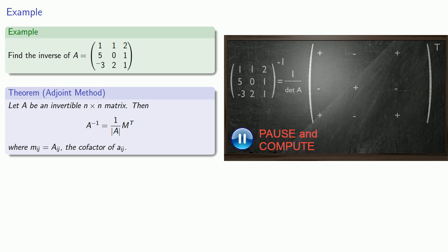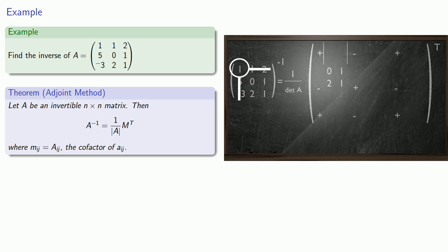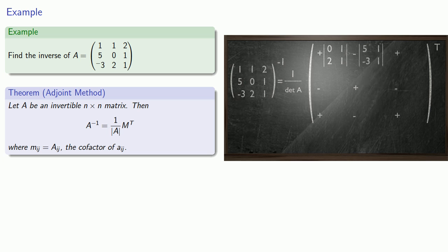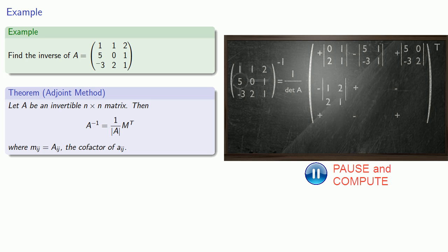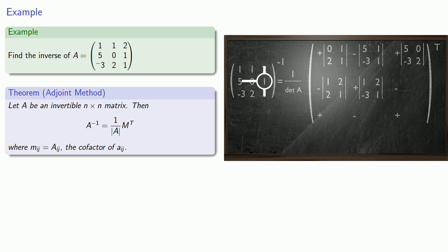For the first row, first column, we'll cross out that row and column, and the minor will be the determinant of what's left over. For the first row, second column, we'll cross out the first row and second column to get the minor. For the first row, third column, we'll cross out the first row and third column, and the determinant of what's left over will be the minor. We'll do the same thing for the entries in the second row and for the entries in the third row.